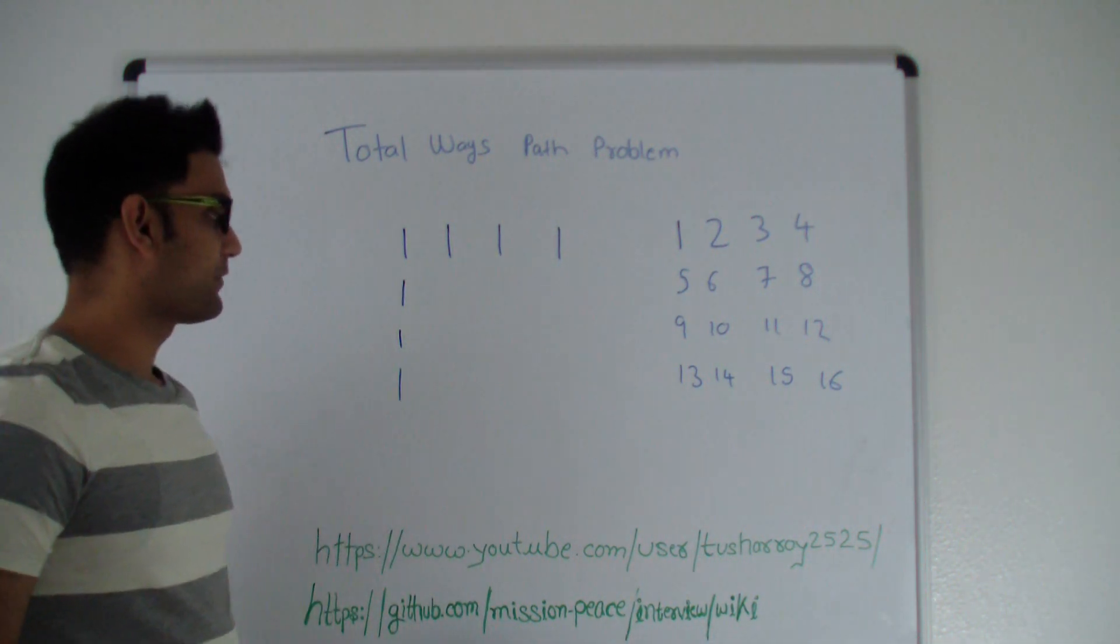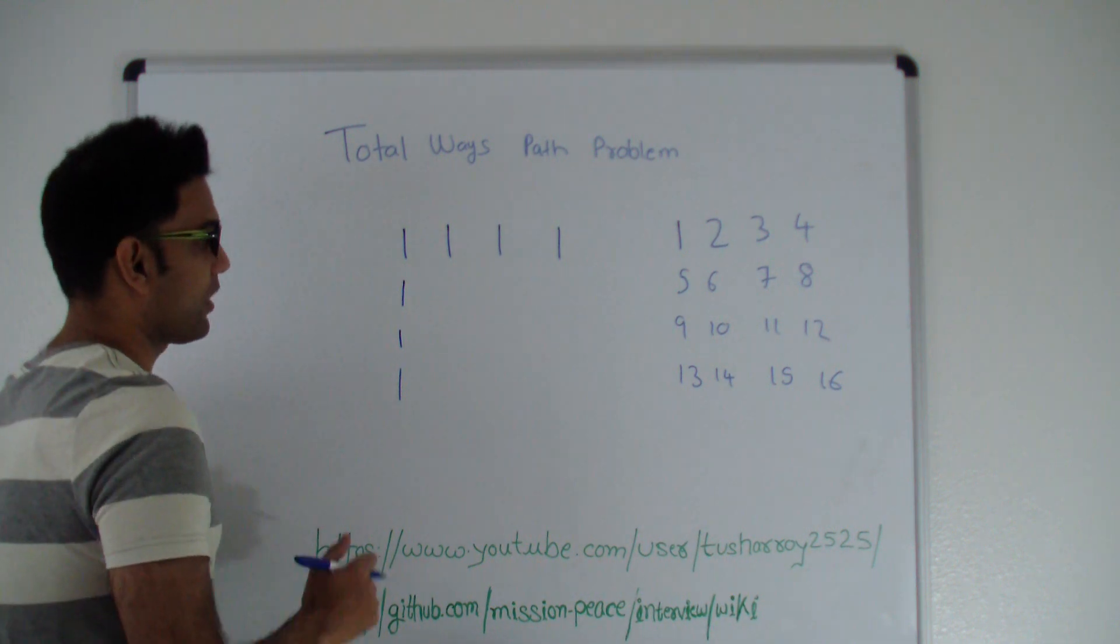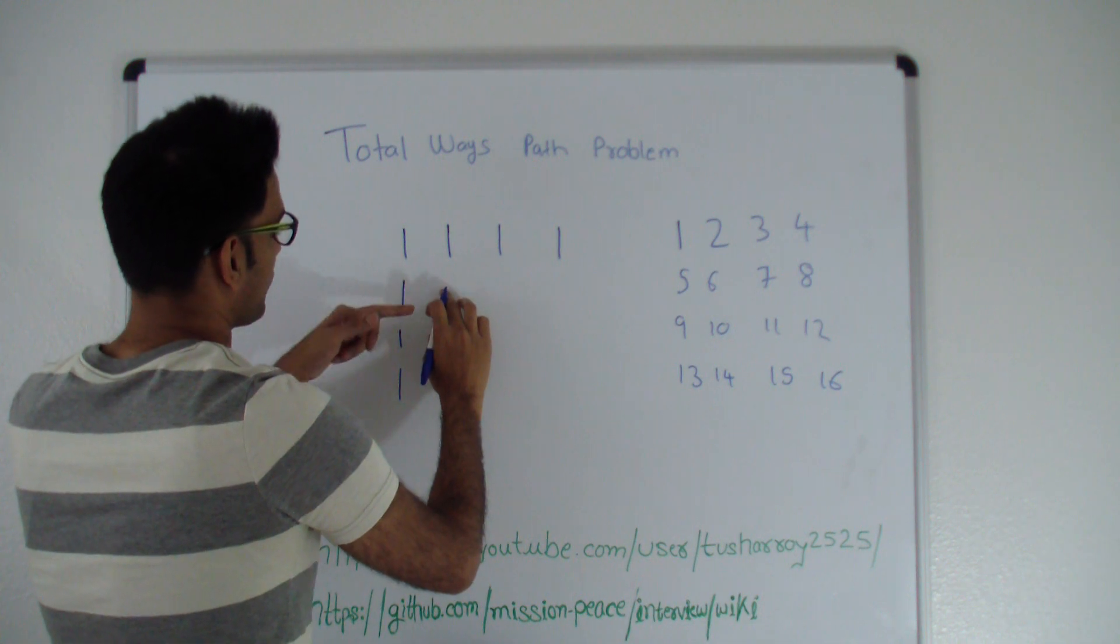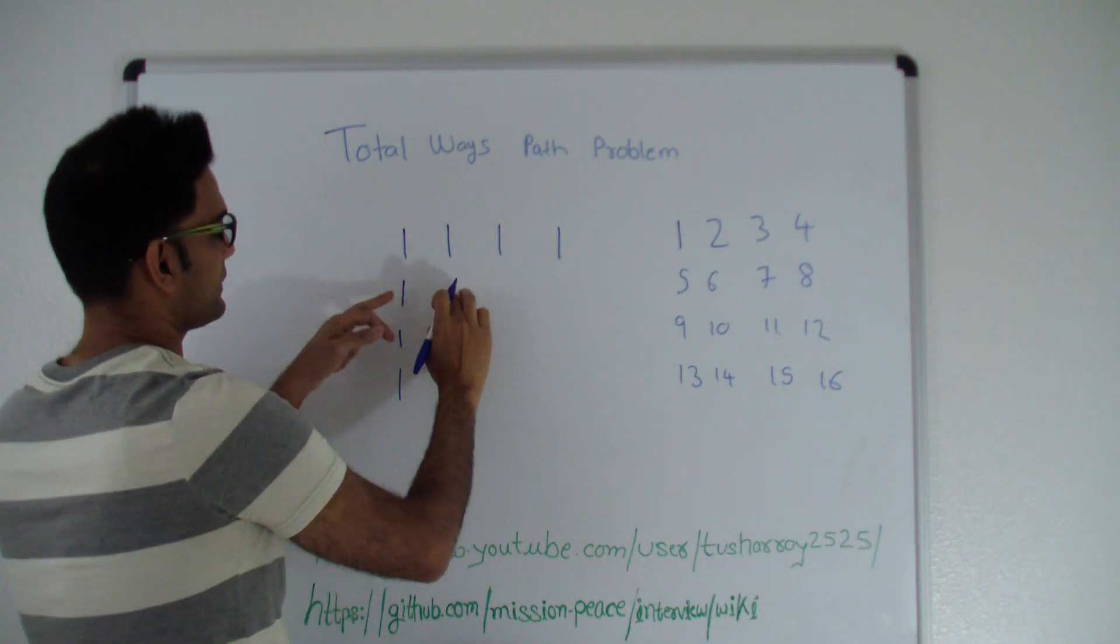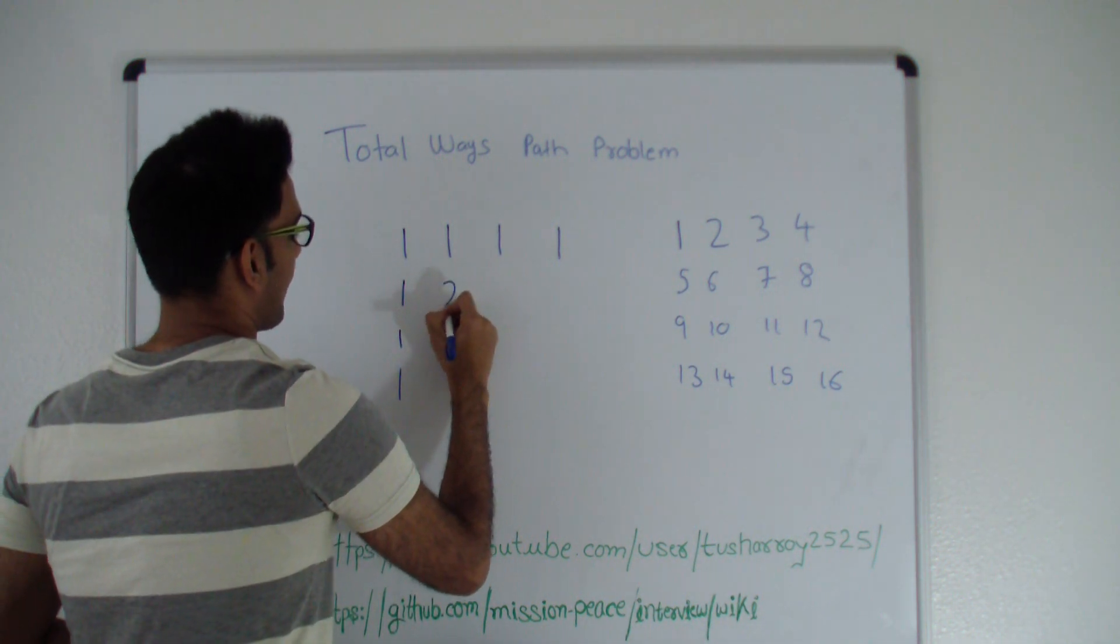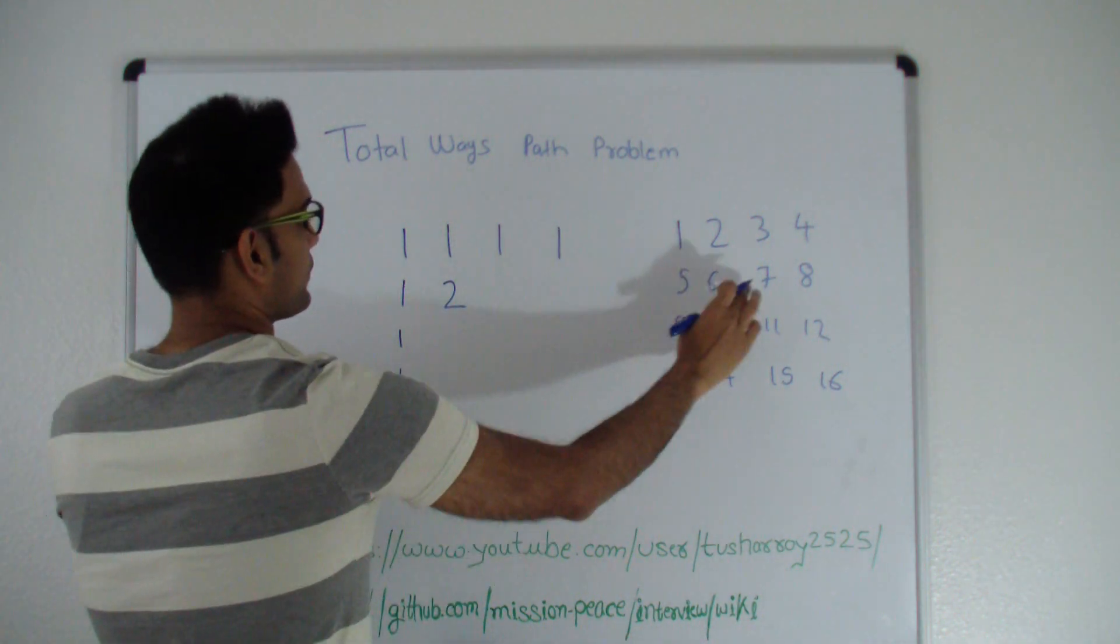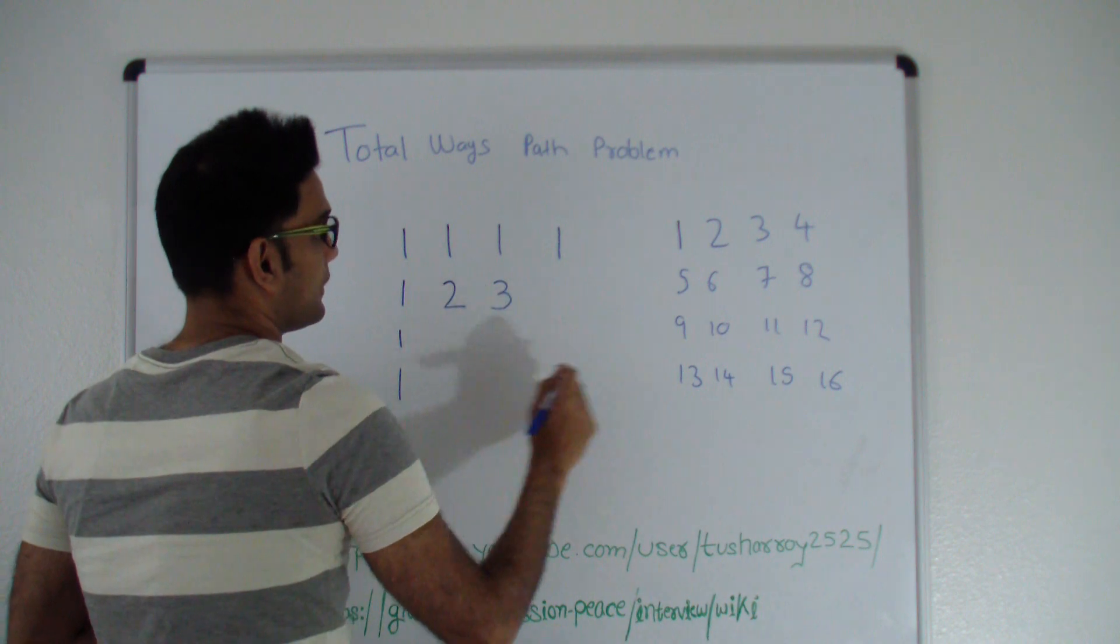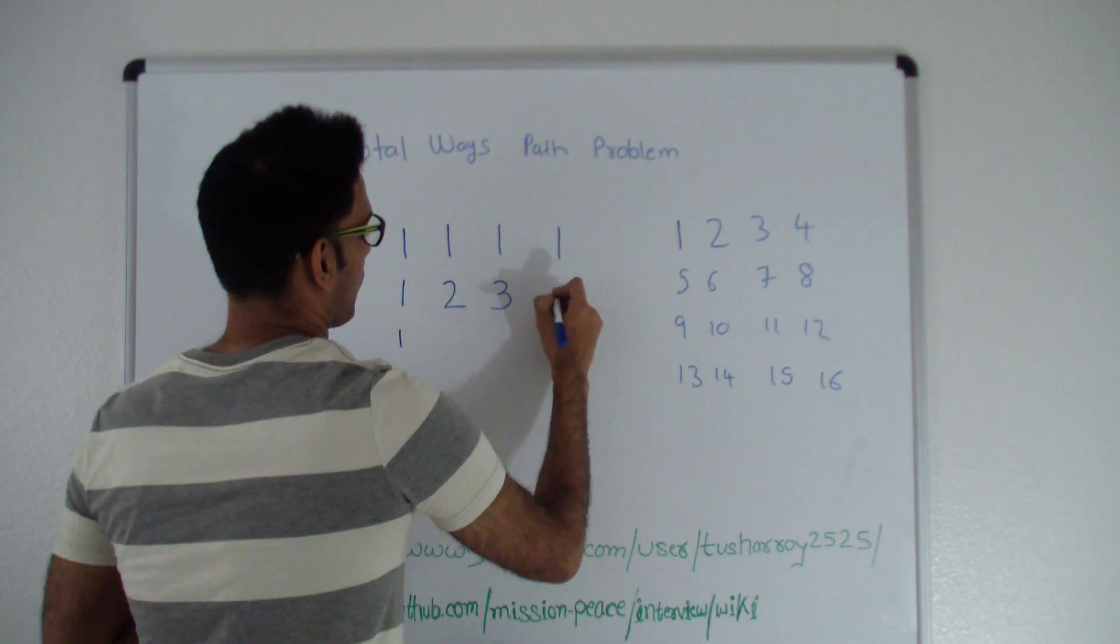Alright, now let's quickly fill up rest of the rows and columns. So to reach six, you can come from top or you can come from left. The total number of ways to reach six is one plus one, two. Total number of ways to reach seven is two plus one, three. Total number of ways to reach eight is three plus one, four.